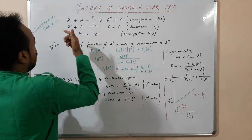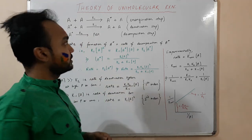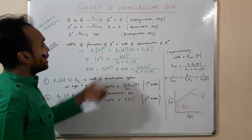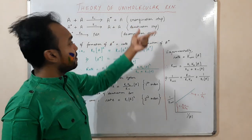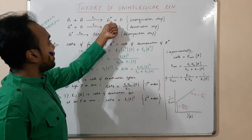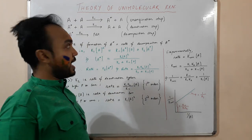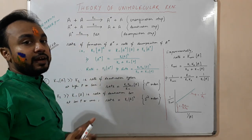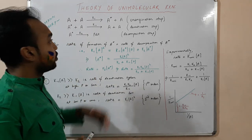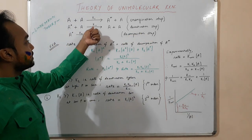Now, before formation of the product from the A* species, there is a deactivation step. Why does this happen? Because there is a time lag between this energization step and this decomposition step — that is, between the formation of A* from A and the formation of product from A*. Due to this time lag, A* molecules get de-energized when they collide with unactivated A molecules to form the reactant again. This is the deactivation step, and the rate constant is K₋₁.